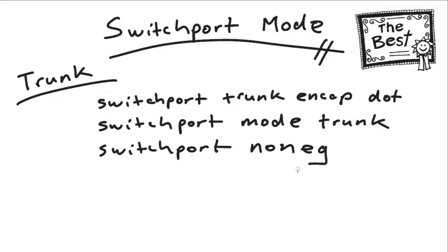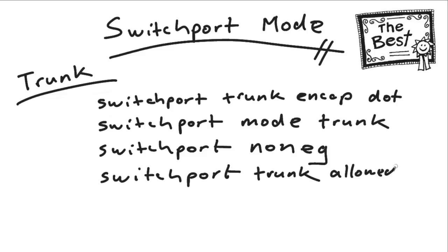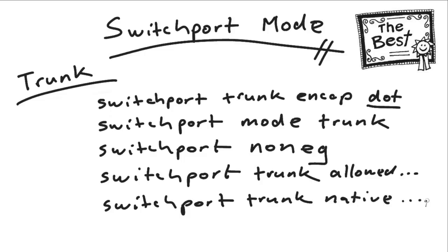You would typically follow this up with commands that add more security. You would do switchport trunk allowed VLANs and permit only specific VLANs on the trunk. Then in a dot1q environment you would use switchport trunk native VLAN and set the native VLAN to an unused VLAN in your topology so you're not actually doing anything on the native VLAN. You could also choose to tag the native VLAN to add security if your switches support that.